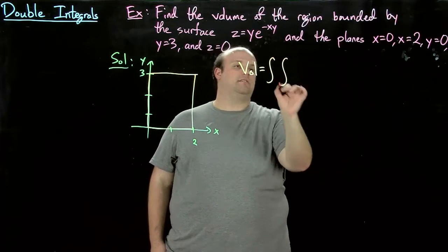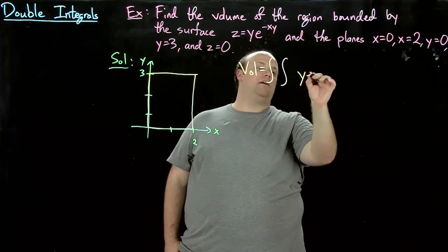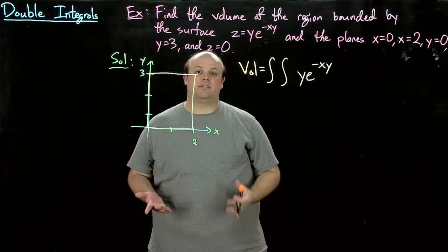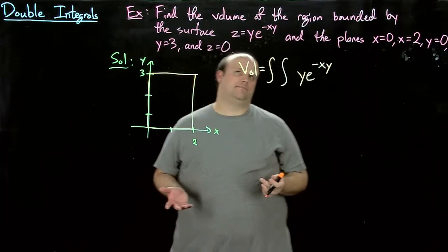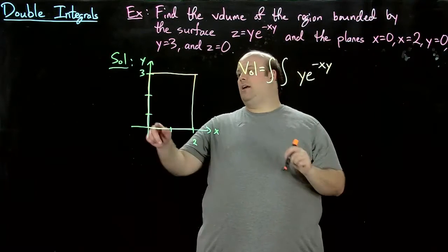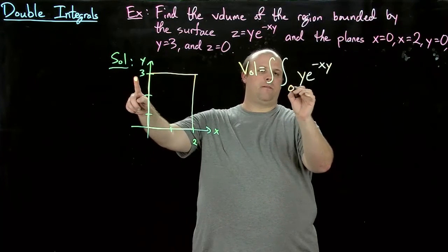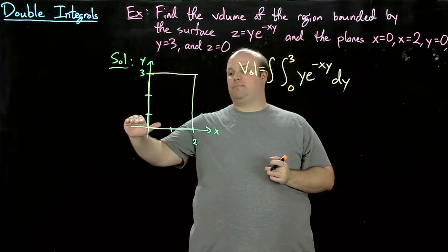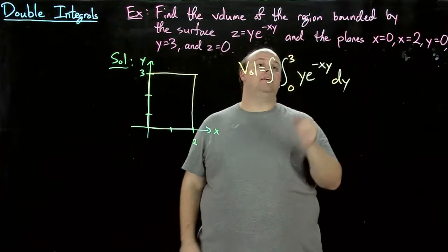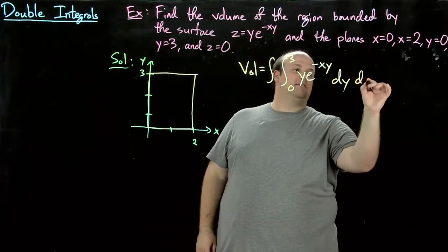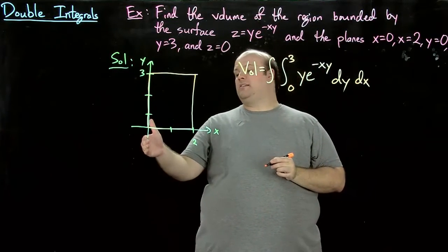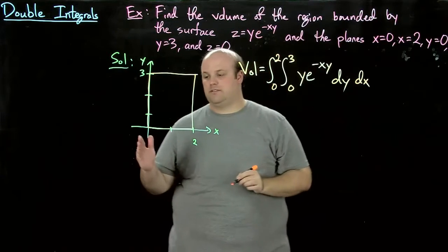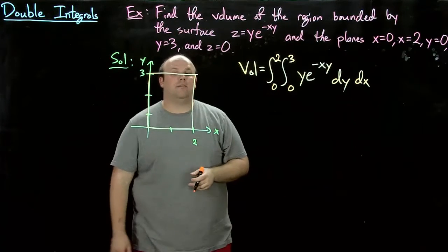So double integral y e to the minus xy. Now let's decide on an order. Let's do y first. So y will go from 0 to 3, and y will always measure from the very bottom to the top. Then dx comes next, and x will go from 0 to 2. And x always goes from left to right.